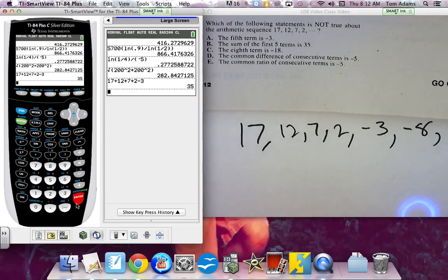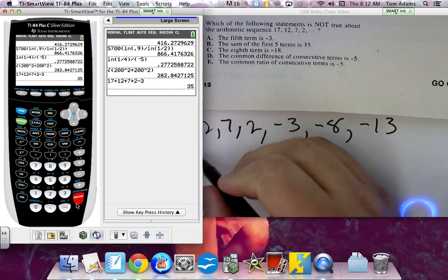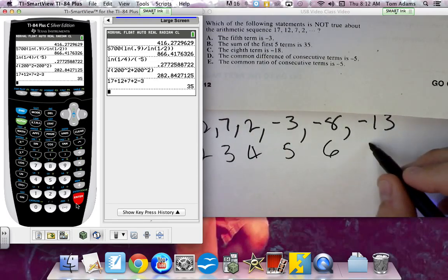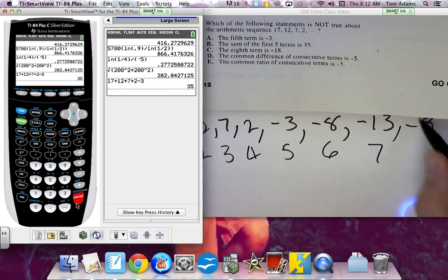Now it says that the eighth term is 18. All right, so what have I written down? I've got, this is the first term, the second term, the third term, fourth, fifth, sixth, seventh. If I subtract 5 again, it's negative 18.